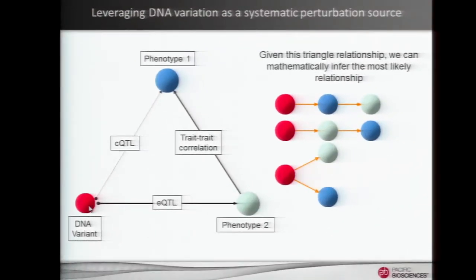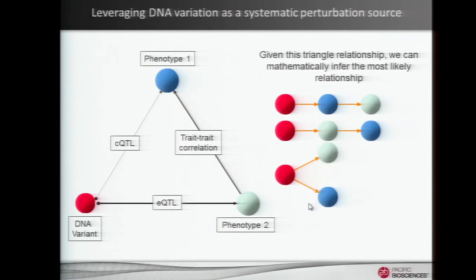Once we have that information, we can look at a single gene or a single DNA locus. If it's correlated with two phenotypes of interest, we can mathematically model how those genes are related to one another. Only three basic possibilities exist: either the DNA variation causes changes in phenotype 1 that goes on to cause changes in phenotype 2, or vice versa, or that DNA perturbation event independently affects both. We can model these systematically over all pairs of genes through an entire space and from that reconstruct networks.